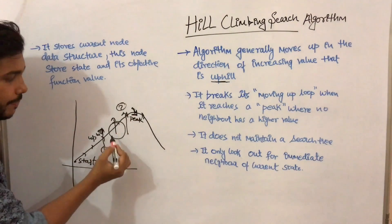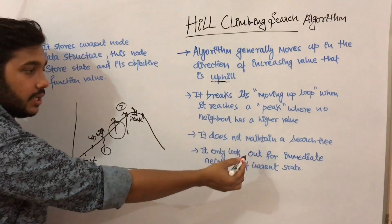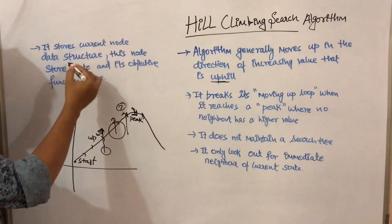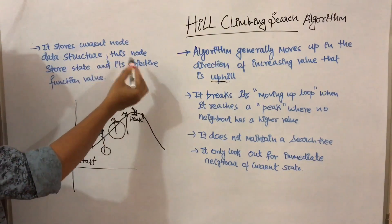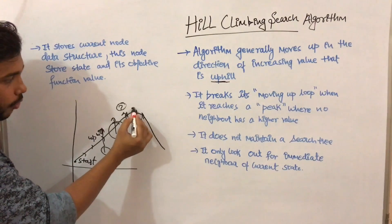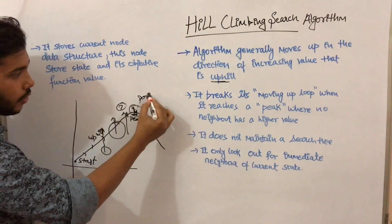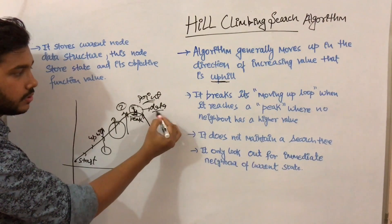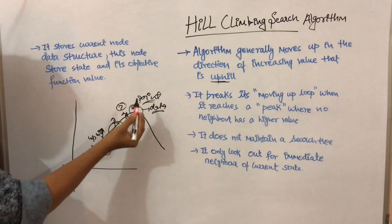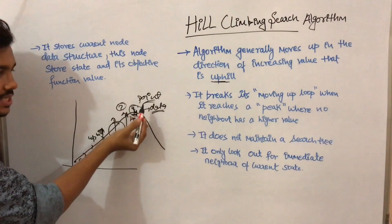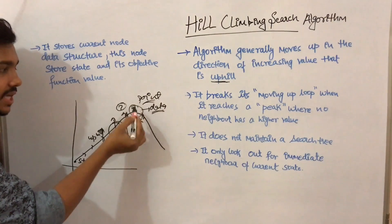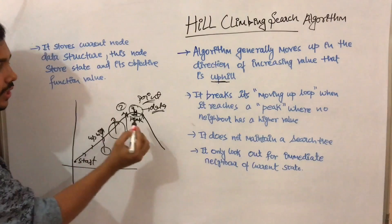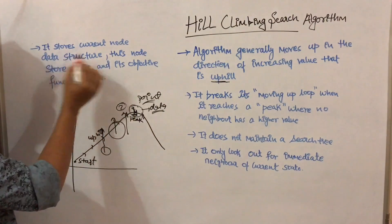At any particular point it will only maintain two neighbor states. It stores the current node's data structure. The node stores the state and its objective function. At a particular point, it will maintain the data structure of the current node — what is its state, whether it is a neighbor state or the current state, and what the function of that state is.